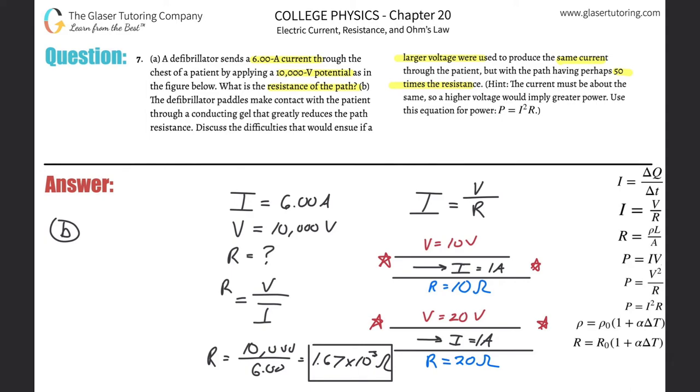They're asking us to think about this in terms of power. So if the resistance goes up, the power, according to this formula, will also go up. The power being applied. So power is equal to I squared times R.